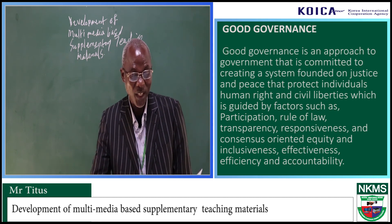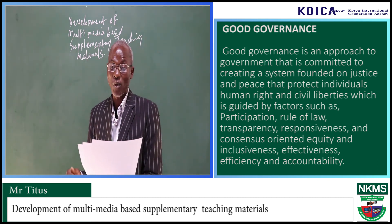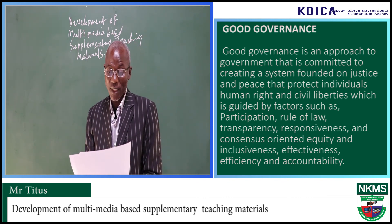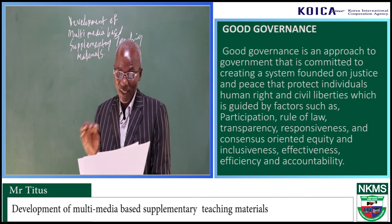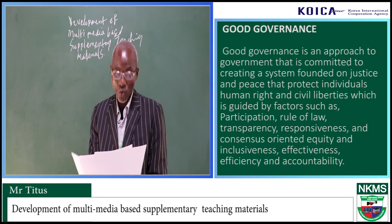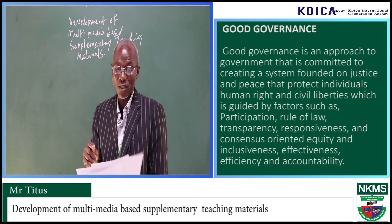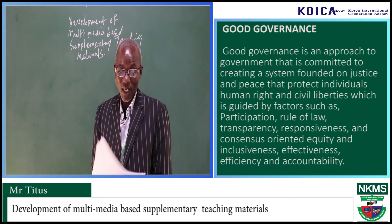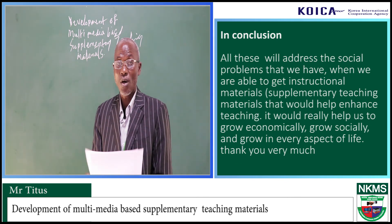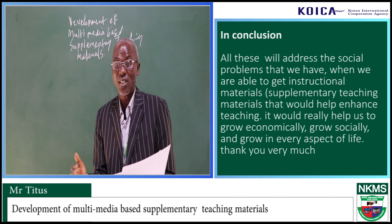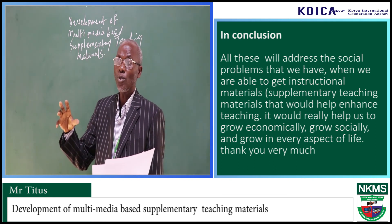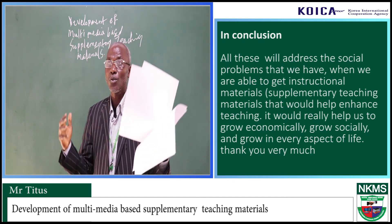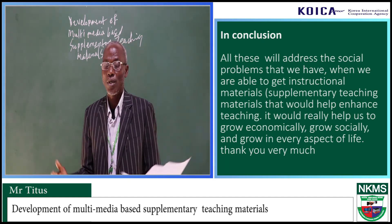For us to correct all these problems, there should be good governance. When we talk about good governance, it is an approach to government that is committed to creating a system founded on justice and peace. In conclusion, the characteristics of good governance involve: participation, rule of law, transparency, responsiveness, consensus-oriented, equity and inclusiveness, effectiveness, and accountability. All these will address the social problems that we have. So when we are able to get instructional materials and supplementary teaching materials that will help enhance teaching, it will really help us grow economically, socially, and in every aspect of life.